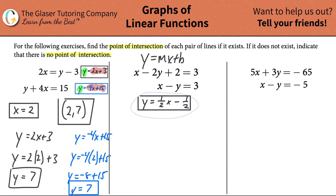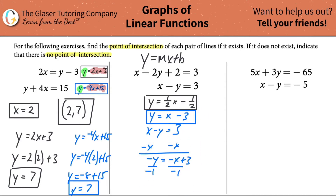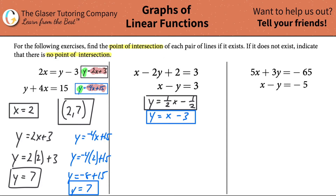For the second equation, x - y = 3, I subtract x to get -y = -x + 3, then divide by -1 to get y = x - 3. Checking the two equations: they're not identical, and the slopes are 1/2 and 1 — not the same — so these two lines have exactly one point of intersection.